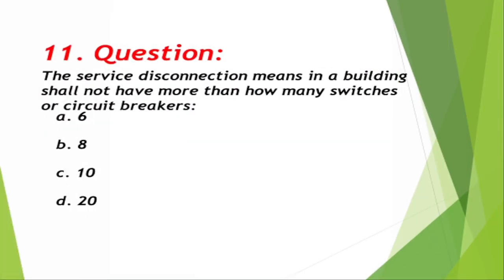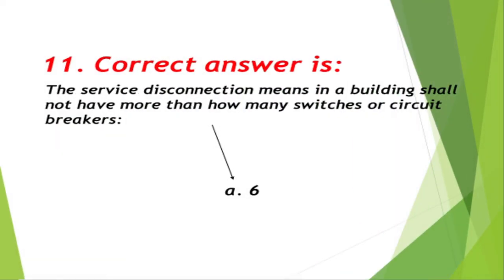Question number 11: The service disconnecting means for a building shall not have more than how many switches or circuit breakers? A. 6, B. 8, C. 10, D. 20. Correct answer is A, 6.